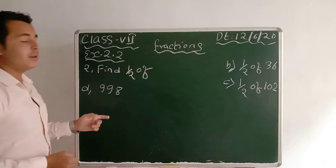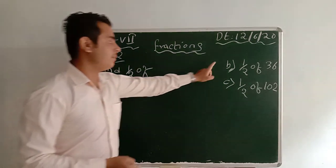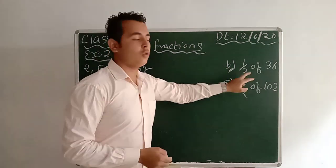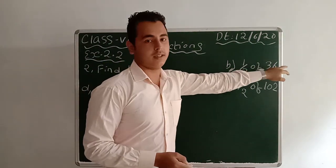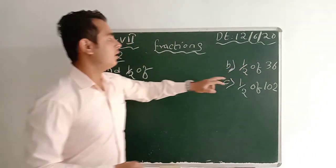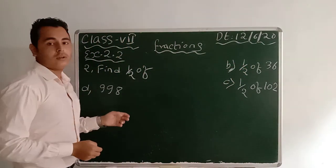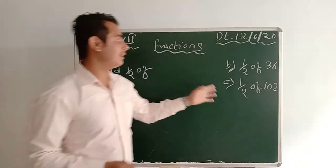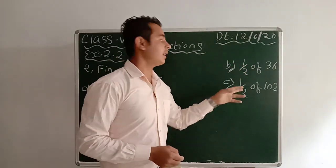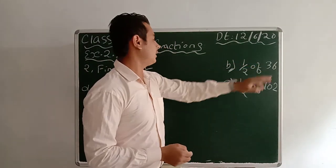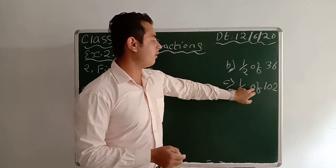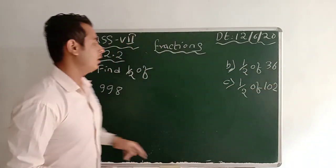A number I did. B and C are your homework. Half of 36 and half of 102 — you should do those the same way I did before.